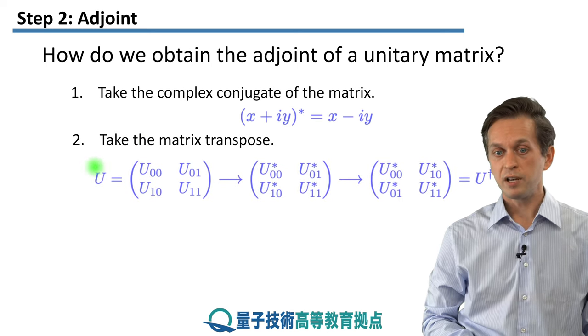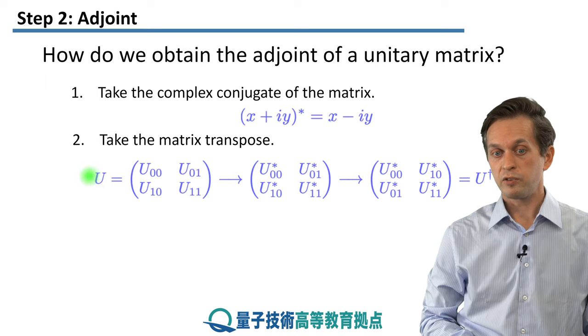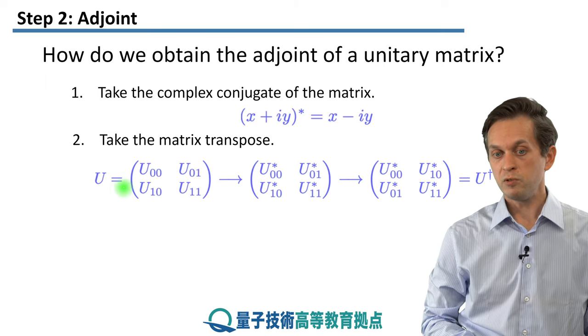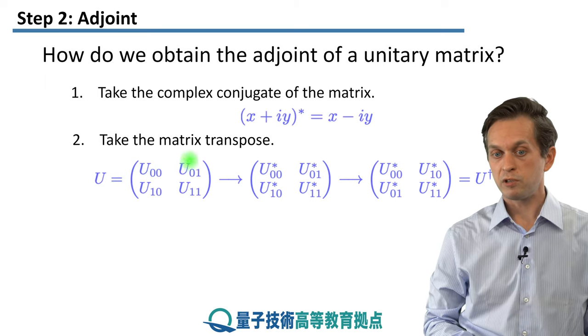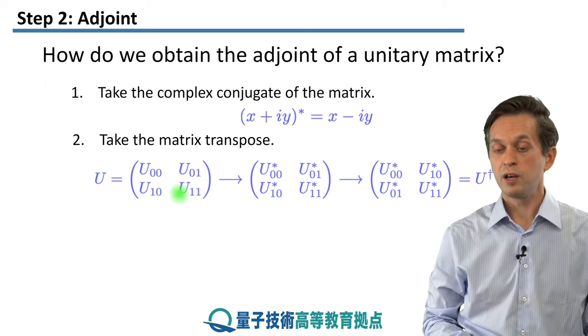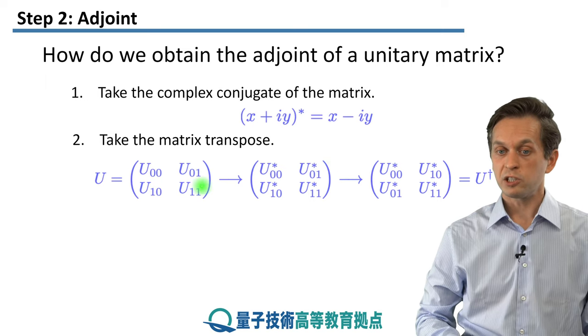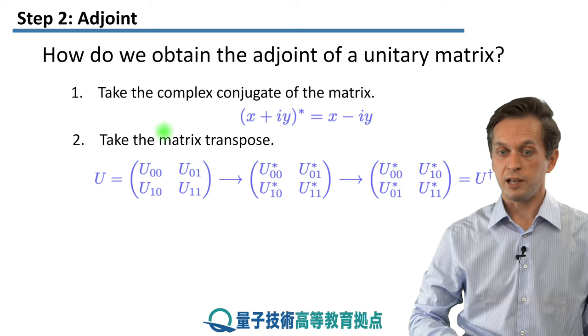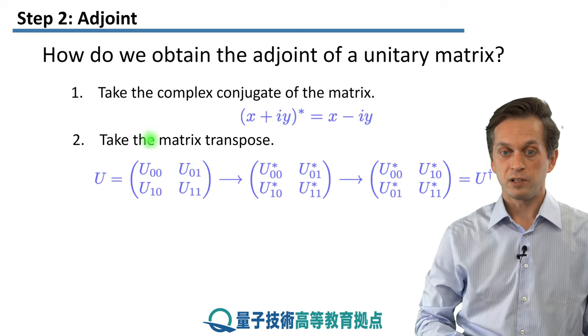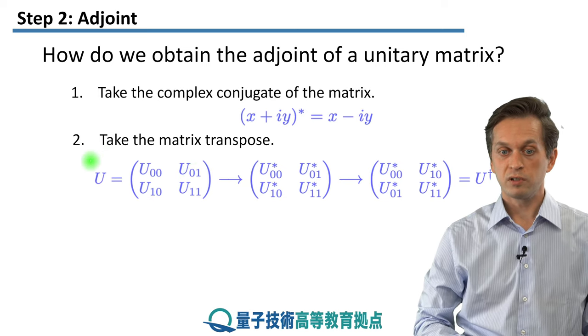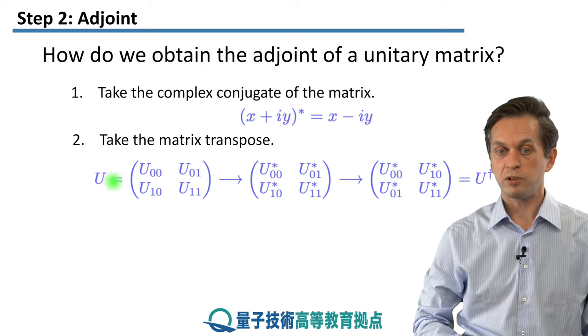The transpose of the matrix is given as follows. So for any matrix U, which has elements U₀₀, U₀₁, U₁₀, and U₁₁, transposing them will exchange the off-diagonal elements.